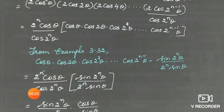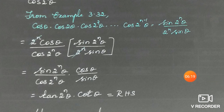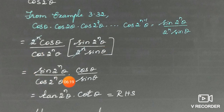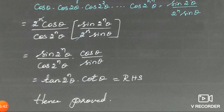Applying the result: 2ⁿ·cosθ divided by cos(2ⁿθ) multiplied by sin(2ⁿθ)/(2ⁿ sinθ). The 2ⁿ and 2ⁿ cancel. So we have sin(2ⁿθ)/cos(2ⁿθ) · cosθ/sinθ, which is tan(2ⁿθ)·cotθ. This is the same as the right hand side, hence proved. Thank you.